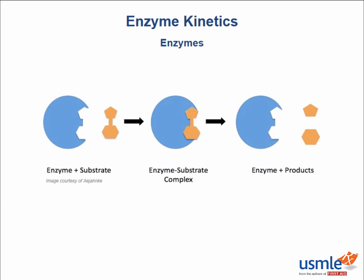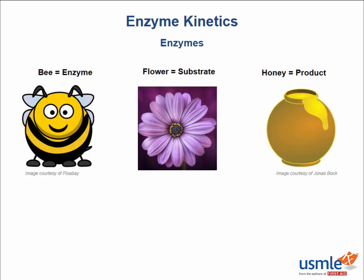As you know, enzymes speed up reactions. They do this by binding their substrate, forming an enzyme-substrate complex, and converting that substrate into a final product. A simple analogy can be made between bees, flowers, and honey. Imagine that the bee is our enzyme, the flower or pollen is our substrate, and the honey is our final product.